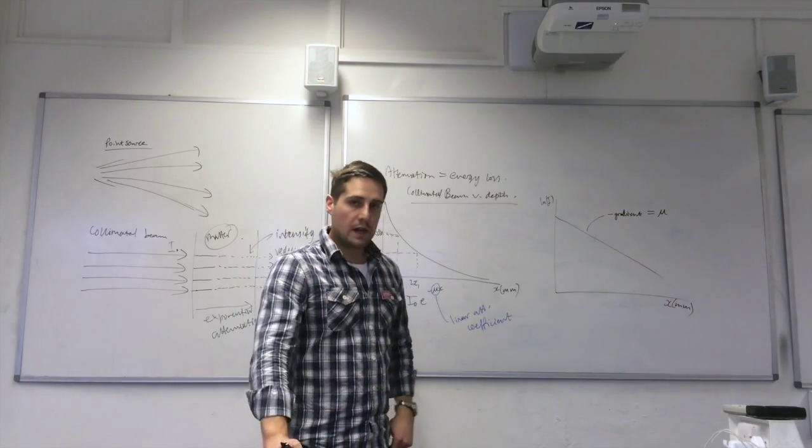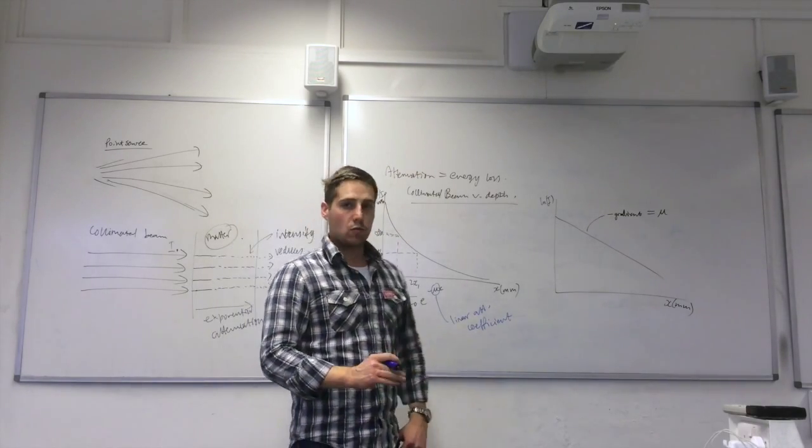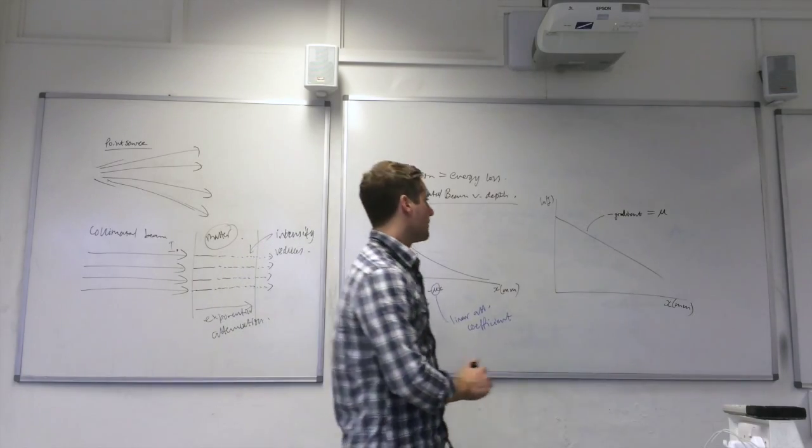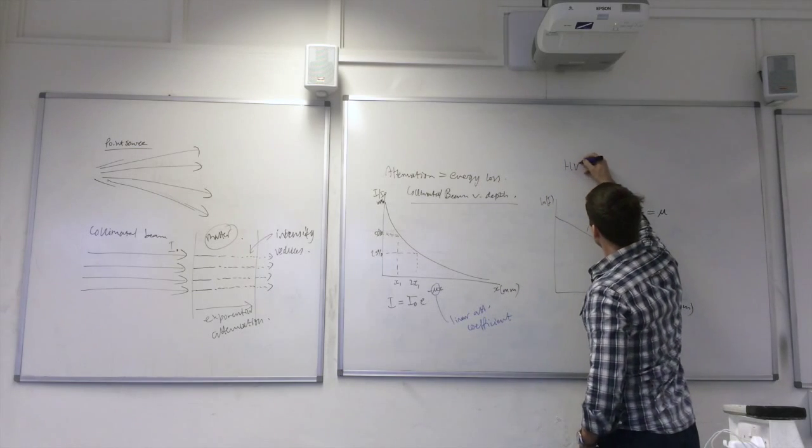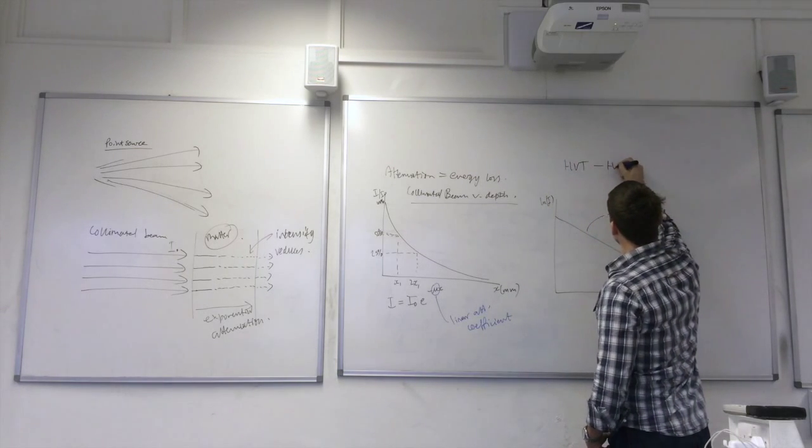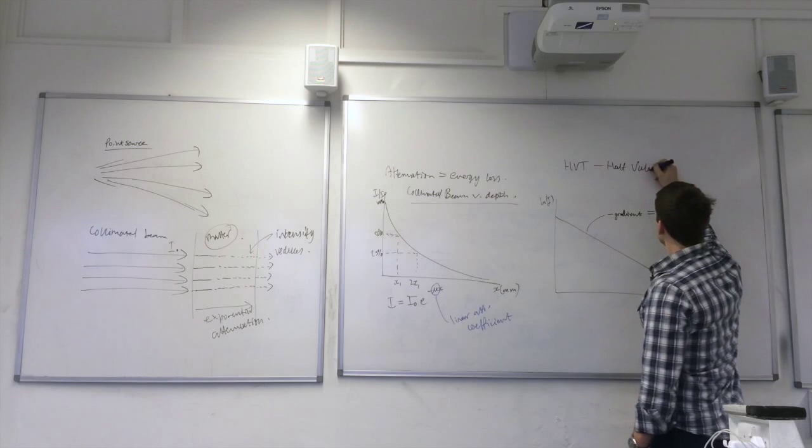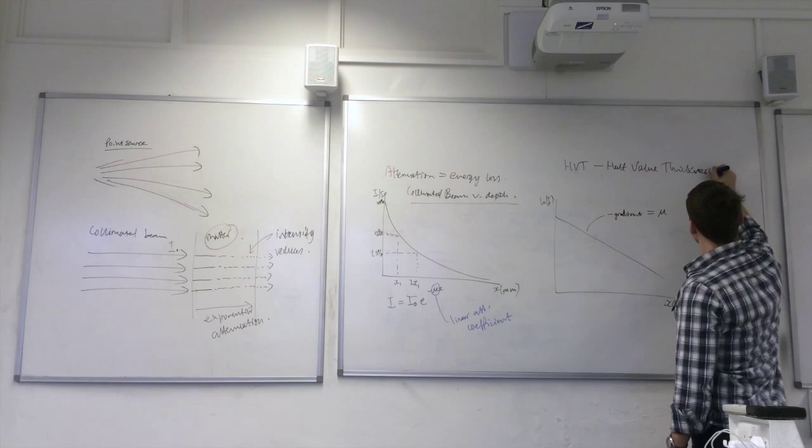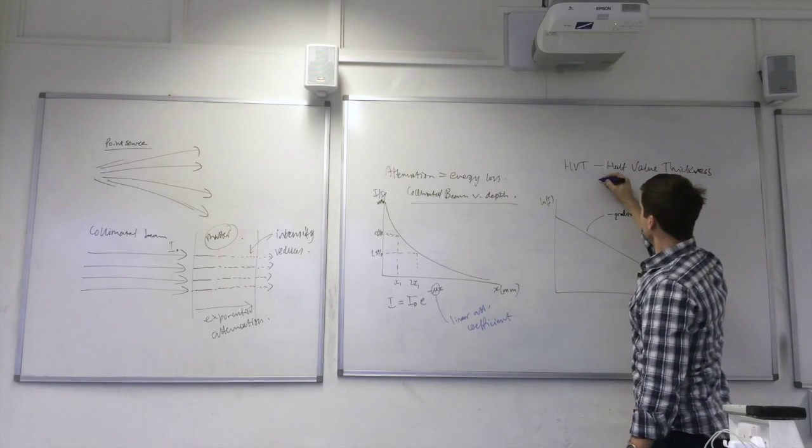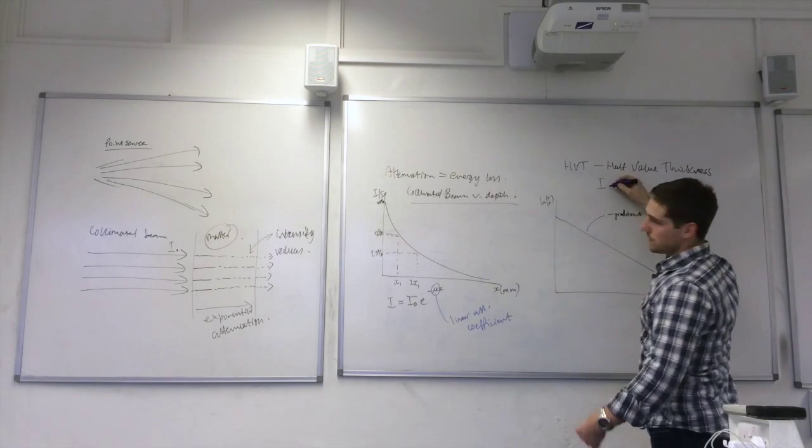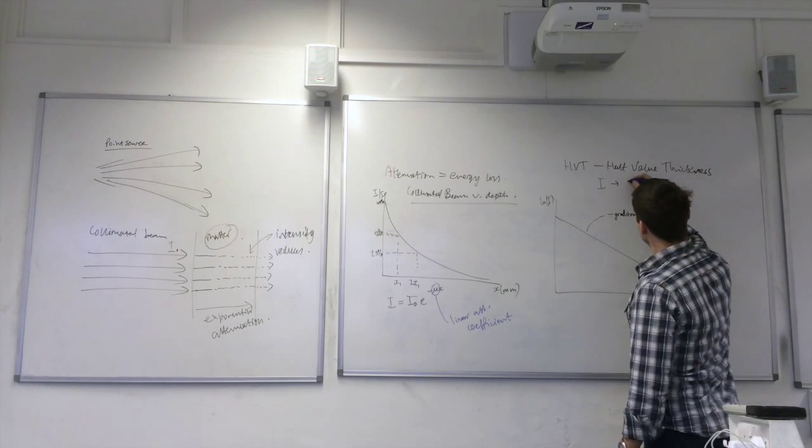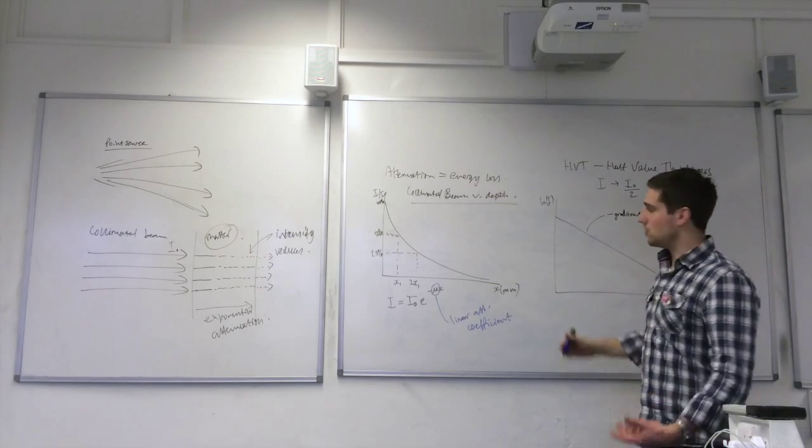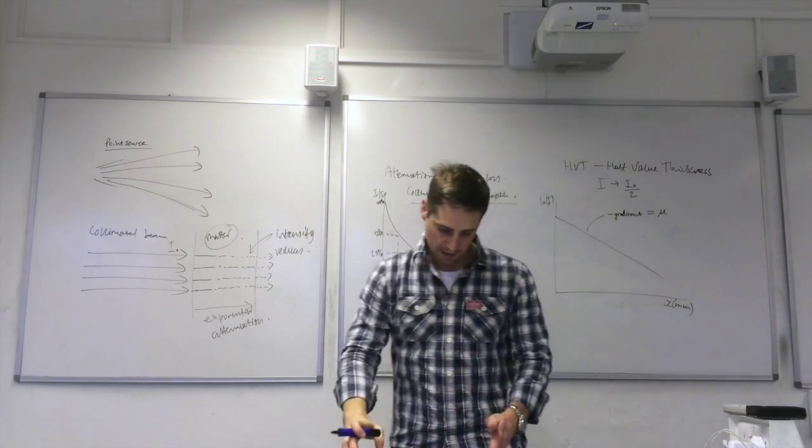The half value thickness is the thickness of material that will reduce the incident intensity to 50%. So, the intensity at the half value thickness is the incident intensity over 2, or 50% of the incident intensity.